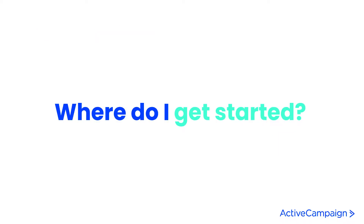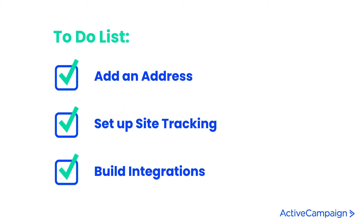If you're wondering where you should spend your time right away, first you want to go ahead and set up an address. We want to make sure that you have your business address set up within the platform so that you can start to send campaigns as soon as you're ready. Whether you're sending campaigns through the campaign builder or through automations, you must have an address affiliated with those campaigns per our terms of service.